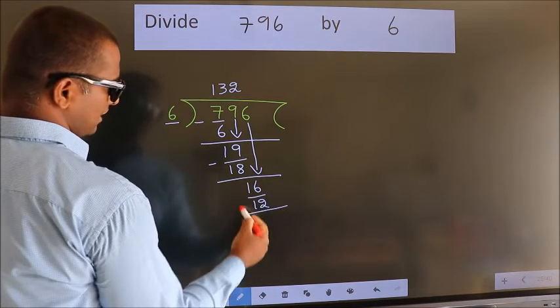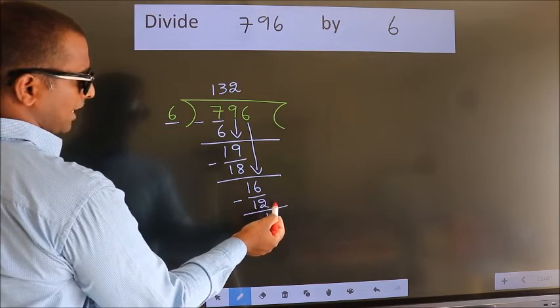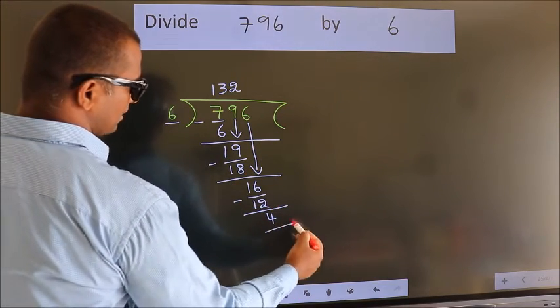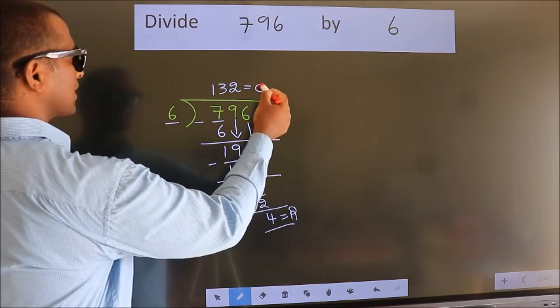Now, we subtract. We get 4. No more numbers to bring it down. So, we stop here. This is our remainder. This is our quotient.